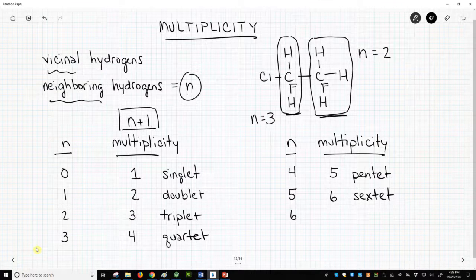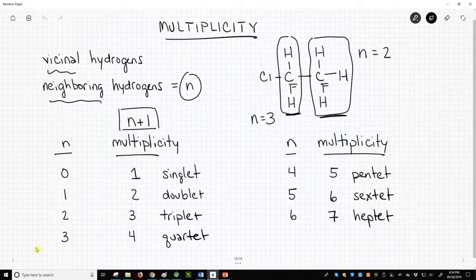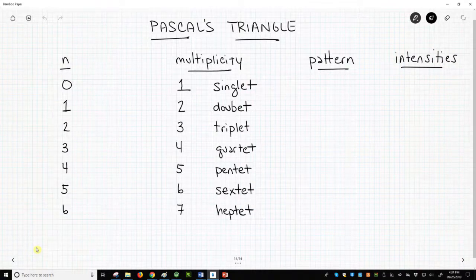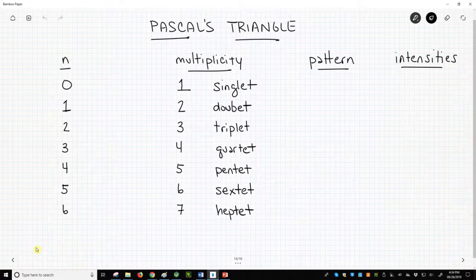And if N equals 6, multiplicity is 7, and we will have a heptet. Six vicinal neighbors is about as high as we need to go. How are the multiplicities different in a spectrum?